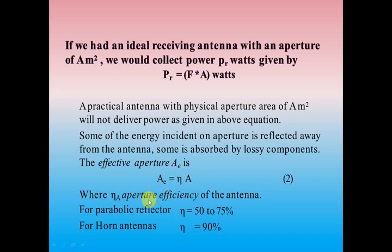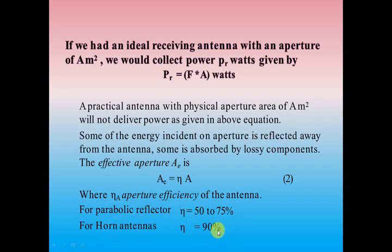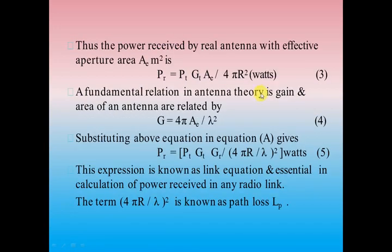For a parabolic reflector antenna, eta can vary between 50 to 75 percent, and for horn antennas it can be approximately up to 90 percent. So the power received by the real antenna with the effective aperture area AE in meter square is expressed accordingly.